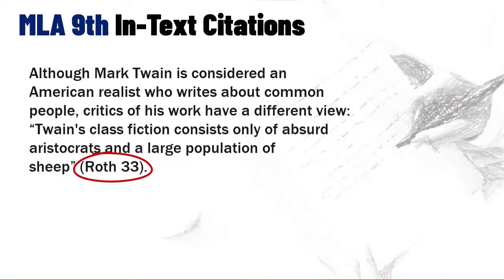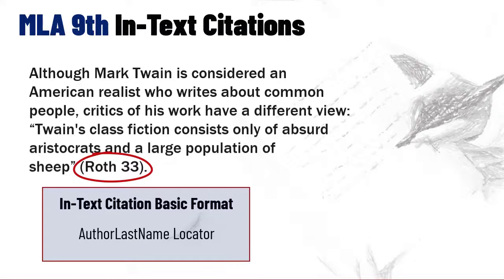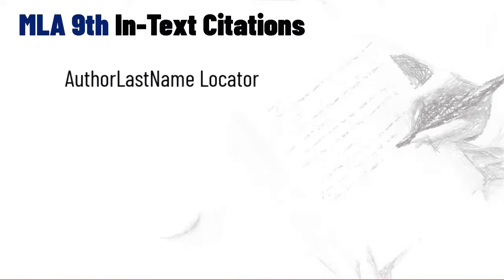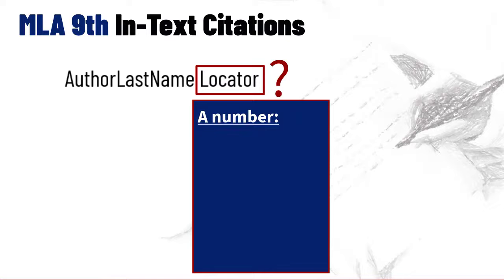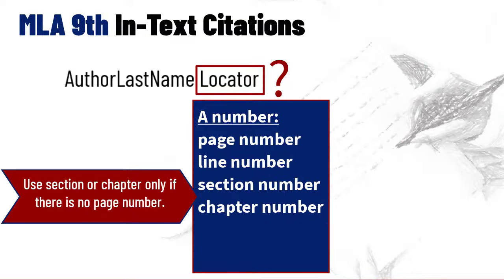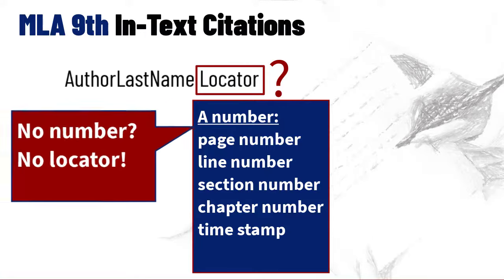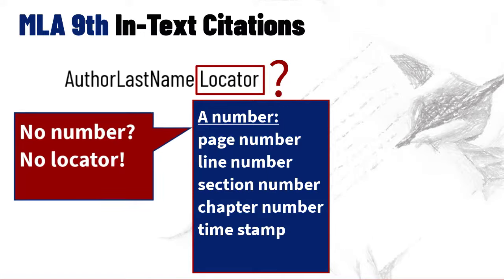As you can see, in MLA, an in-text citation consists only of the author's last name plus a locator. What the deuce is a locator? It's MLA's term for a page number, line number, section number, chapter number, or timestamp.